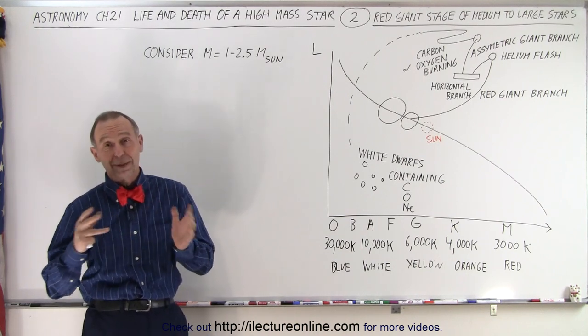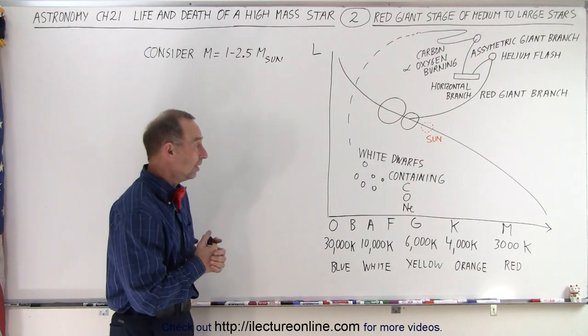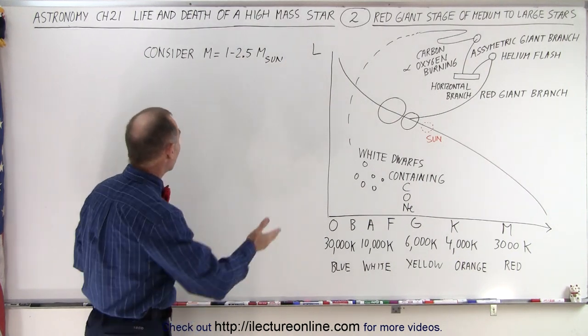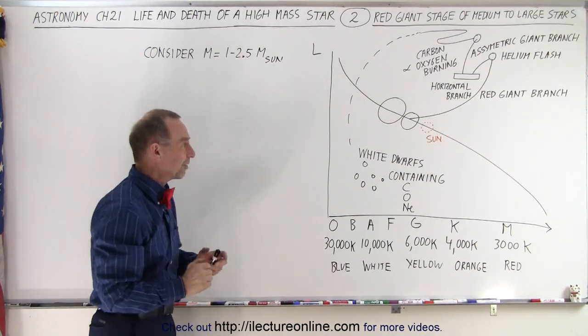Of course, our sun is actually a little bit bigger than the medium-sized star, but let's talk about stars in the range of one to two and a half times the mass of the sun.